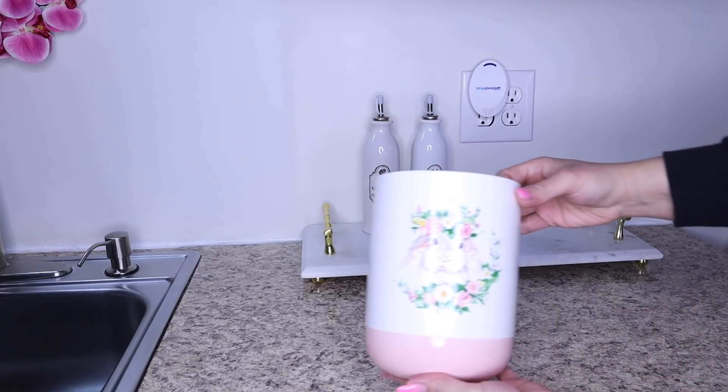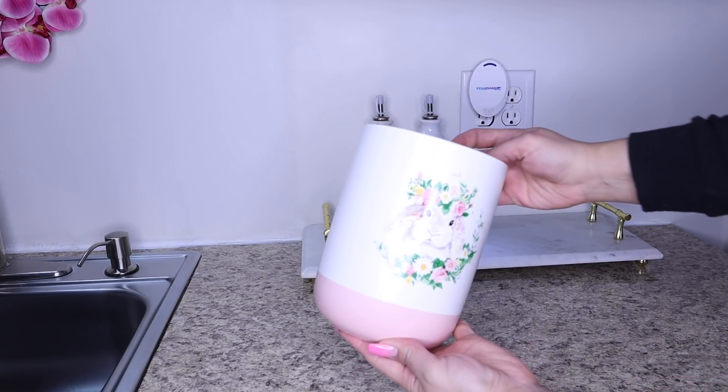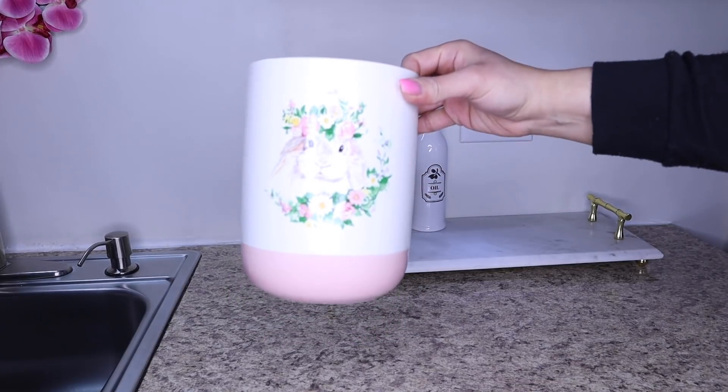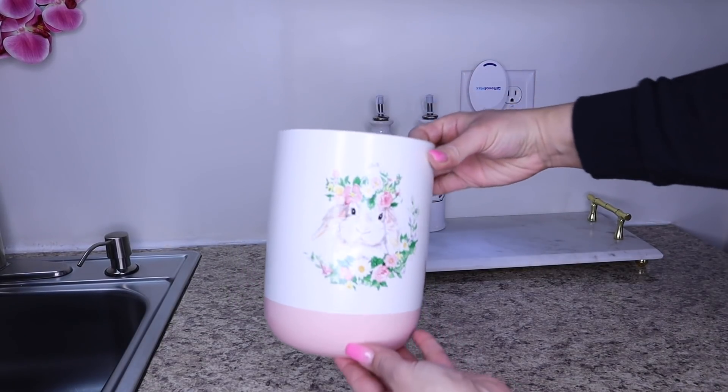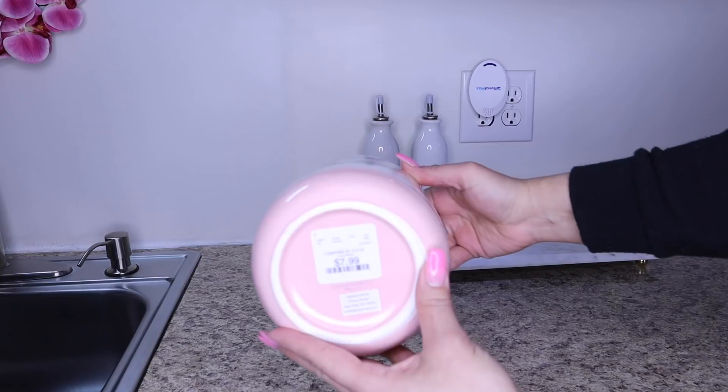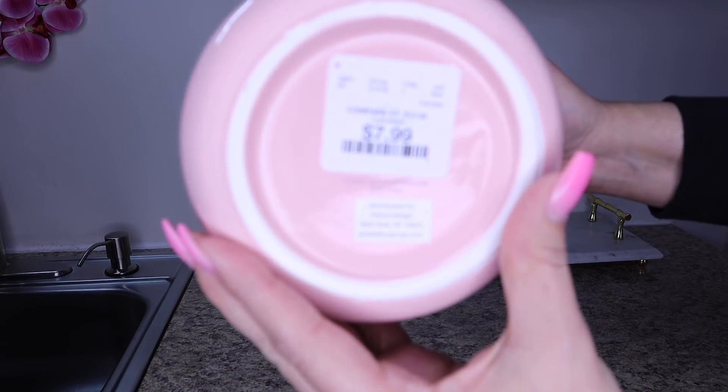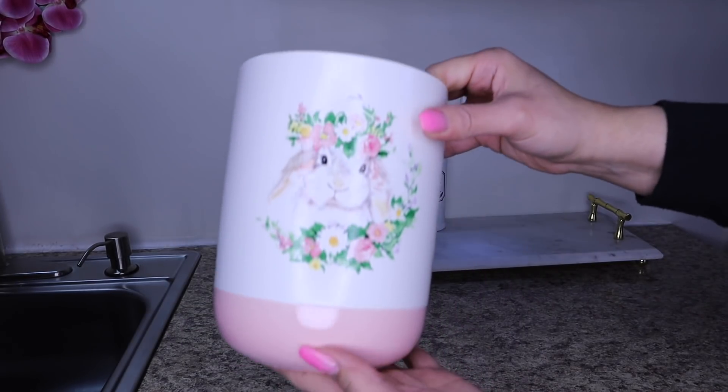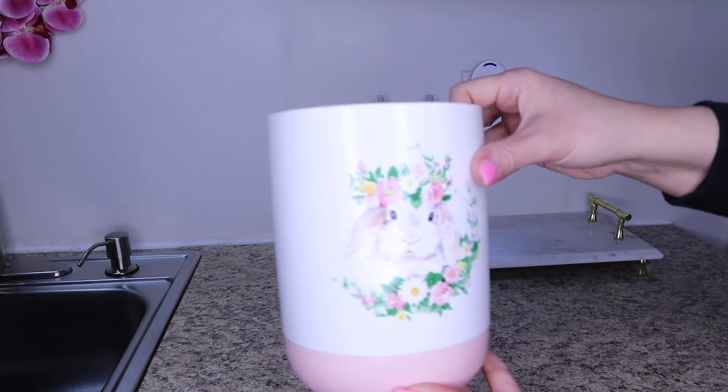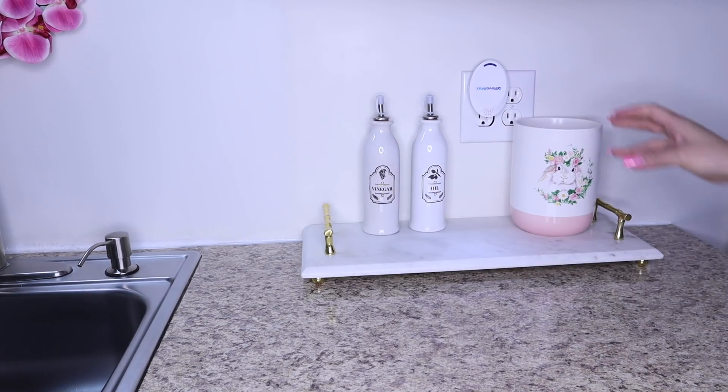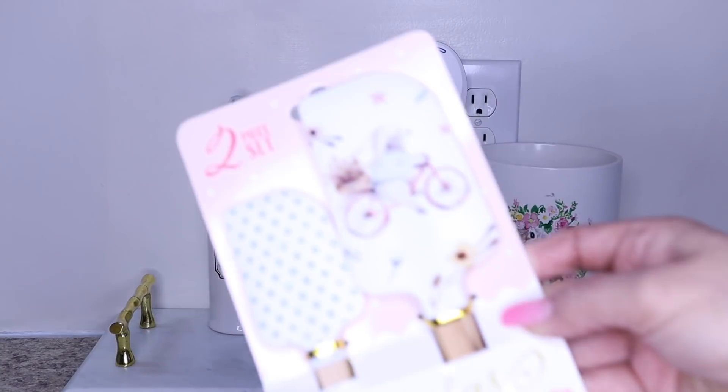On the side I placed this little tray. Here is my vinegar, my oil that I use every day because in this house we cook every day. This container for the spoons I got at TJ Maxx for $7.99. Look how pretty it is with the little bunny and the flowers. I'm going to put it here too. Here I'm going to put the things I use—the spoons and things I use for cooking.